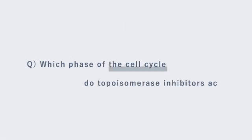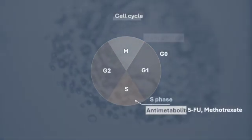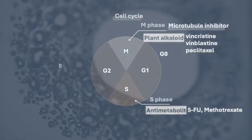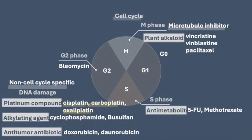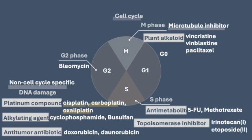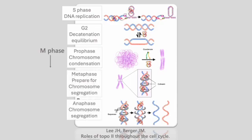Which phase of the cell cycle do topoisomerase inhibitors act in? Topoisomerase 2 acts in the S phase of the cell cycle by blocking DNA replication. Topoisomerase inhibitors also work in the G2 and M phase of the cell cycle. It's believed that the enzyme may help keep sister chromosomes entangled, aiding in chromosome condensation and cohesion without affecting segregation later on.